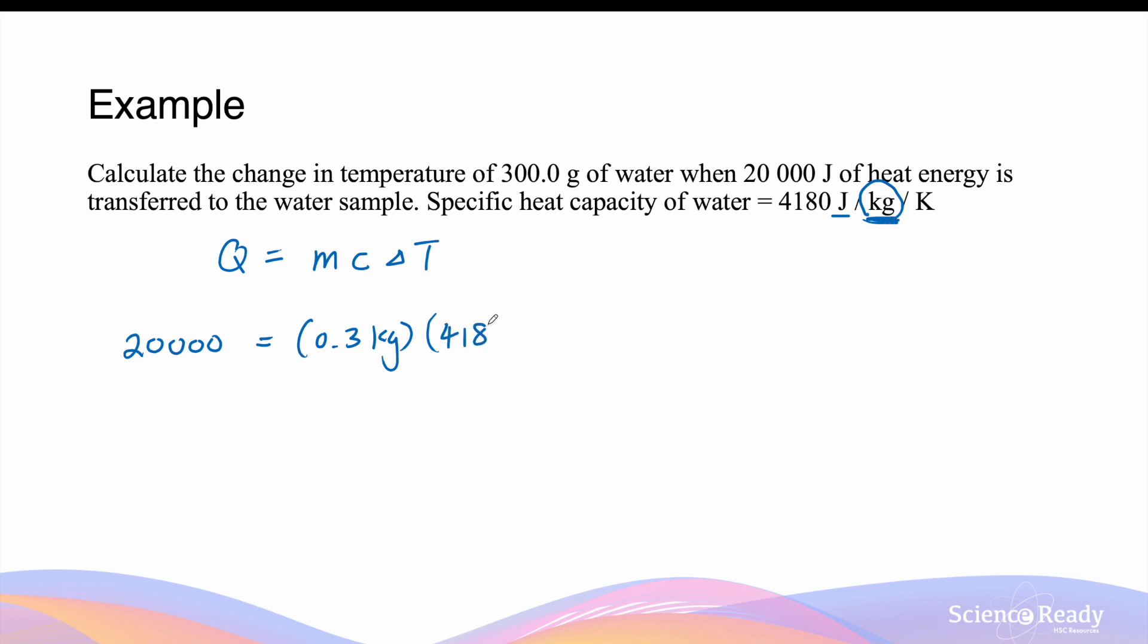So C is 4180, and the change in temperature is what we are trying to calculate. So change in temperature will be equal to 20,000 divided by 0.3 times by 4180.